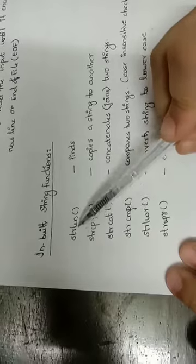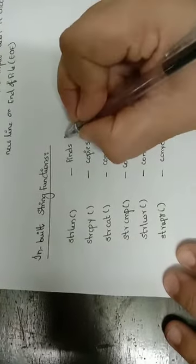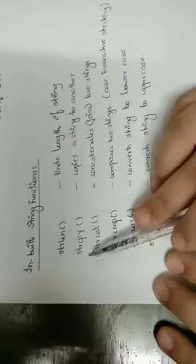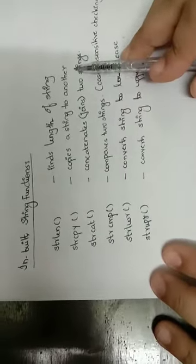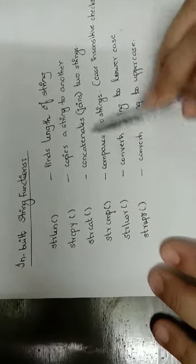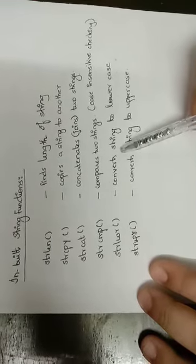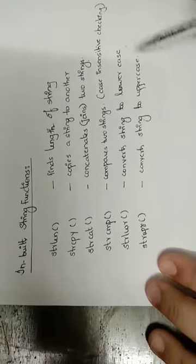So this is all about how you declare a string, initialize a string, and how you can read a string from the user. Next, I am going to teach you about the inbuilt string functions. There are basically the following string functions: strlen — which finds the length of the string; strcpy — which copies a string to another; strcat — which concatenates, meaning it joins two strings; strcmp — which compares two strings; strlwr — which converts a string to lowercase; and strupr — which converts a string to uppercase.